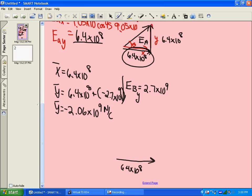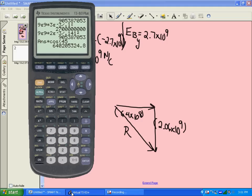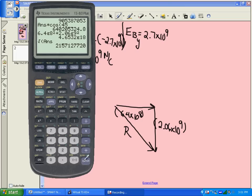We need to work out the resultant. So we do Pythagorean theorem on those. You square this, square that, and take the square root. So we take our 6.4 times 10 to the 8 squared plus 2.06 times 10 to the 9 squared equals square root of the answer. Gives us 2.15 or 2.2 times 10 to the 9. 2.2 times 10 to the 9 newtons per coulomb. That's the strength of the electric field.